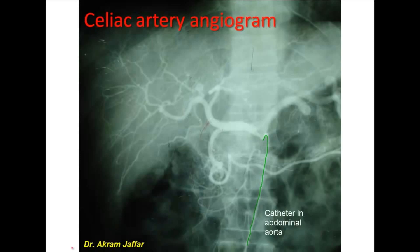You can see some of the branches of the celiac trunk. This is the splenic artery — it's a big branch, characterized by its tortuosity. The tortuosity of the artery is very clear. The other branch is the common hepatic artery.